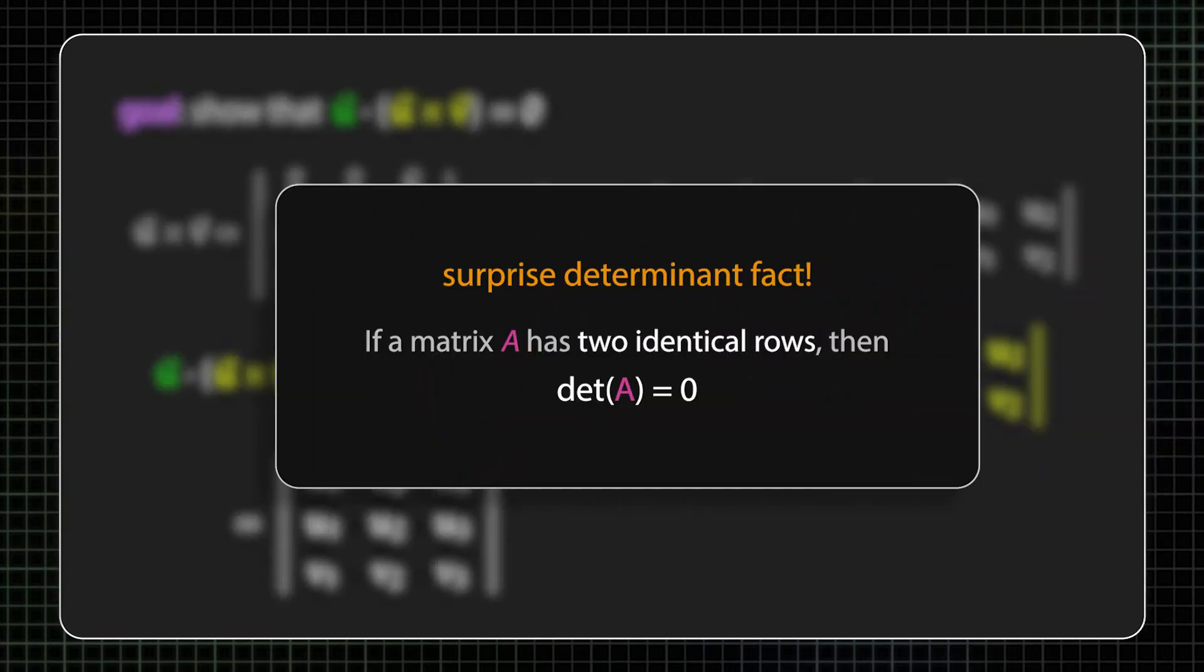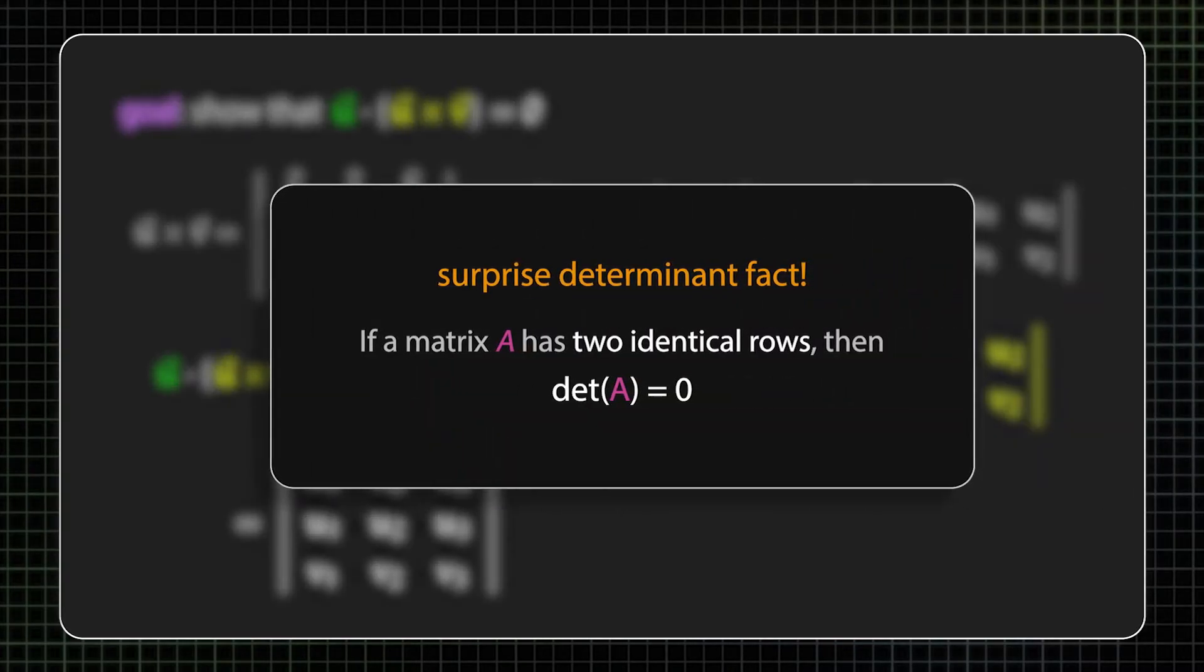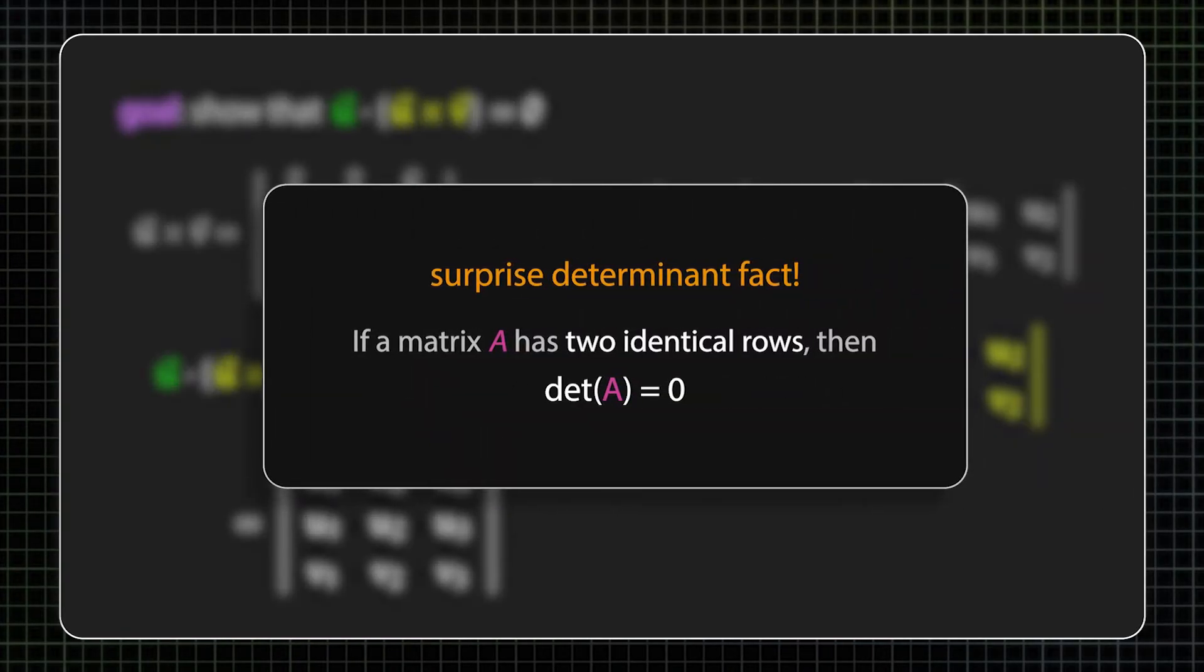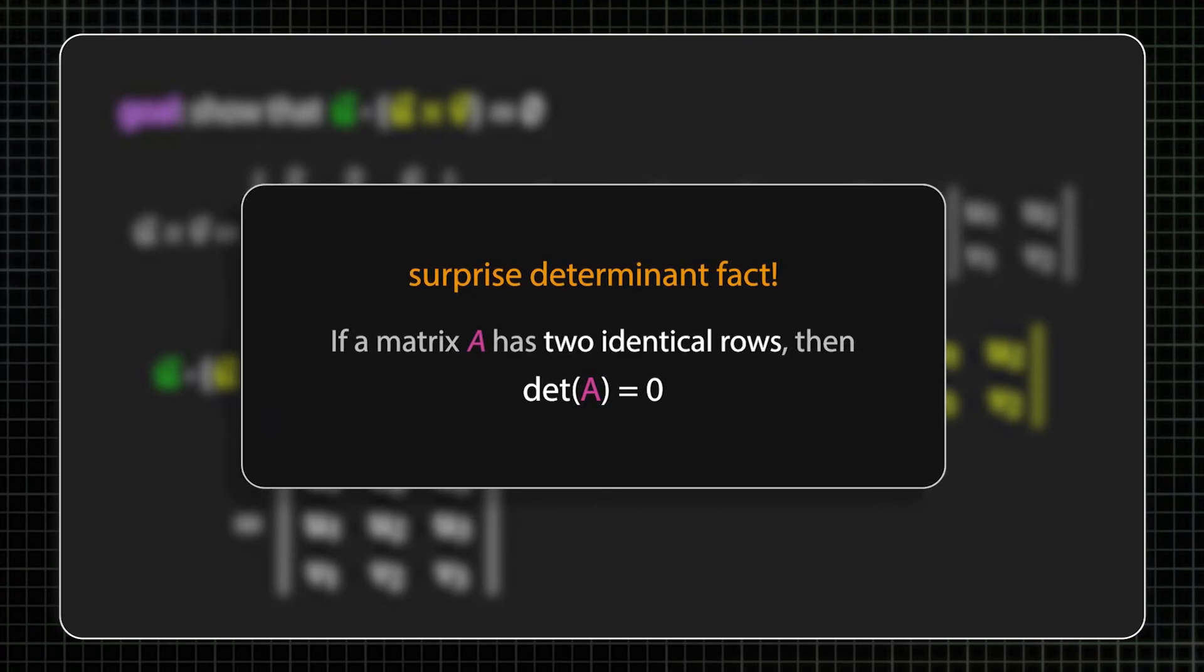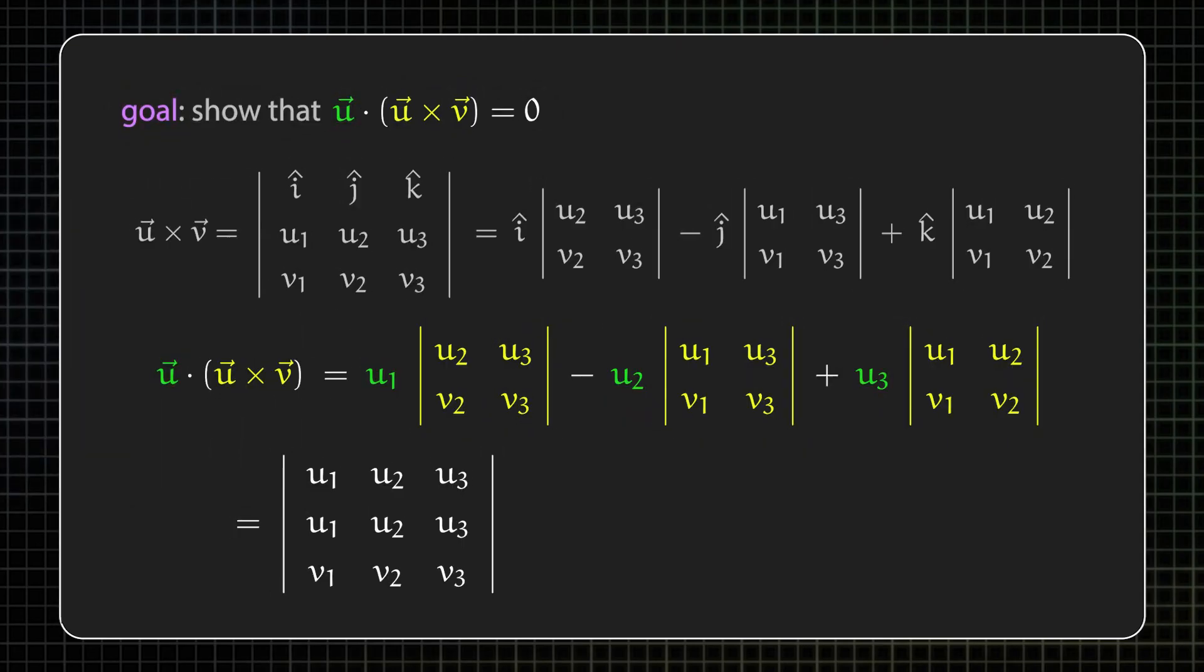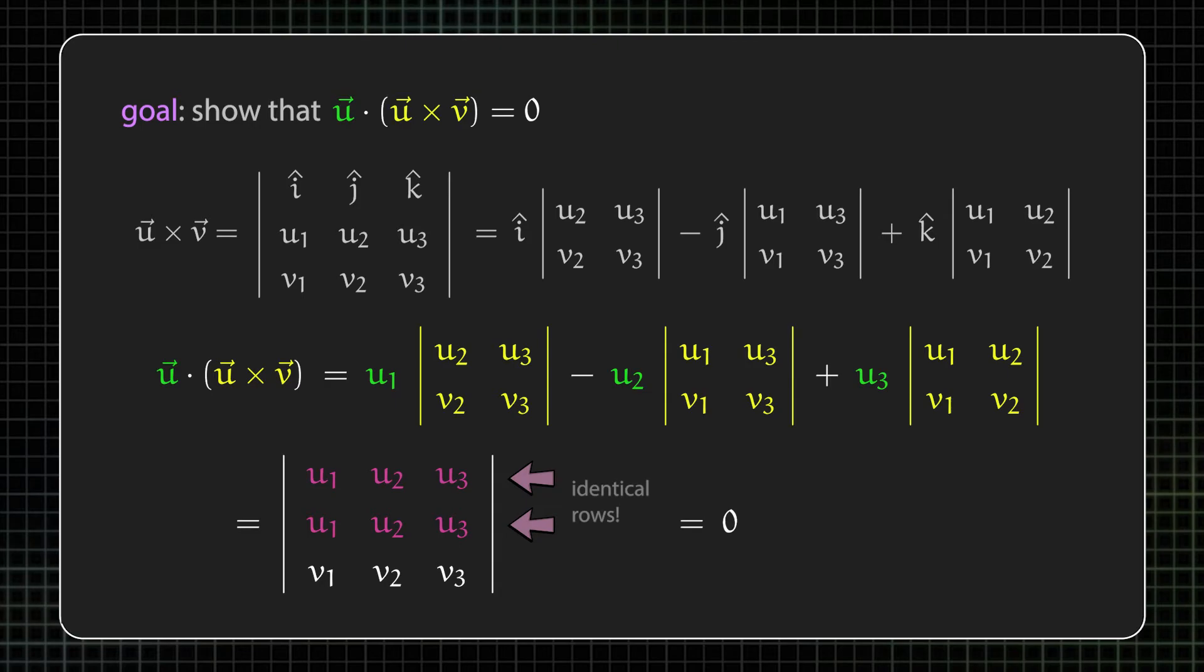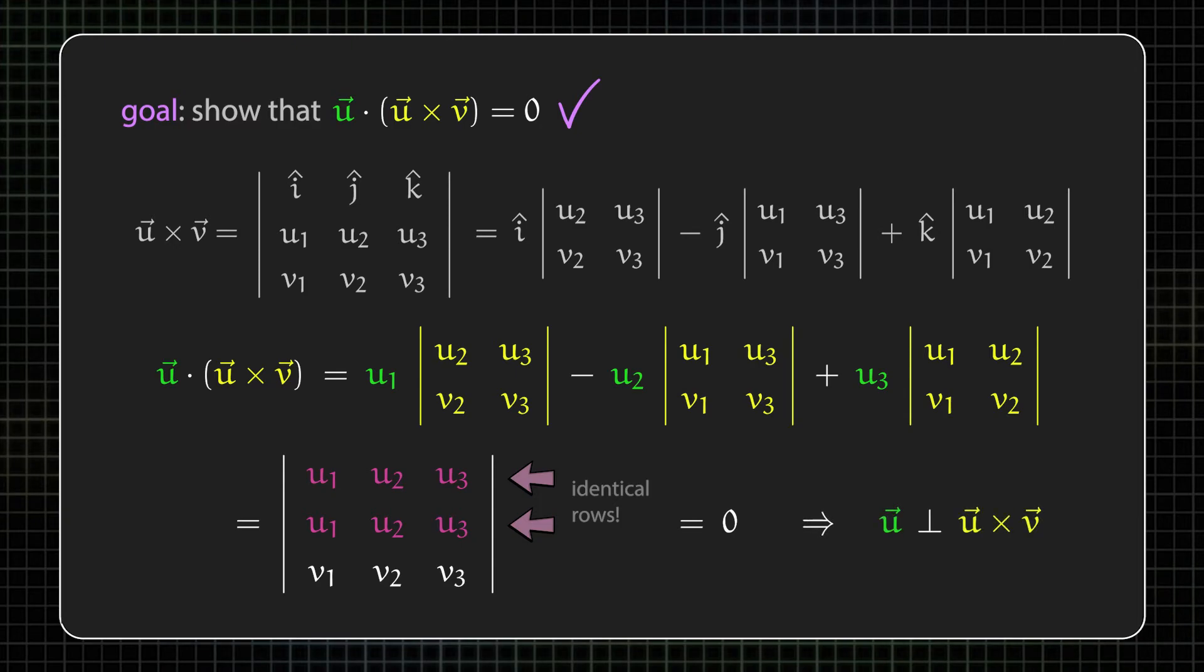Now to tie everything together, here's a special fact about determinants that I didn't mention before. If two rows of a matrix are the same, then the determinant of that matrix is zero. So that means that the determinant of this matrix is zero. So the dot product of u and u cross v is zero. So u and u cross v are perpendicular. Nice.